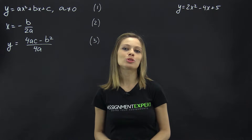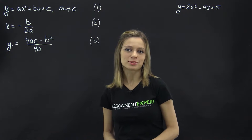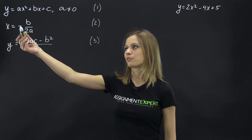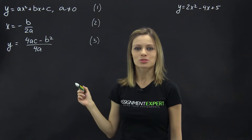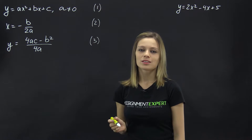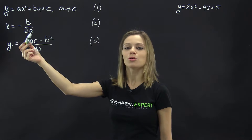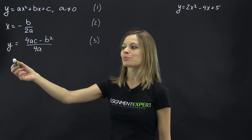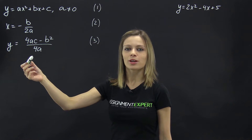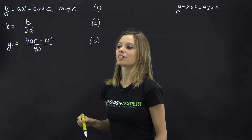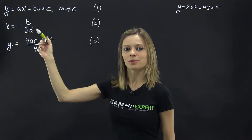A vertex formula is the formula used for calculating the coordinates of the vertex of the parabola y equals ax squared plus bx plus c, where a is not equal to zero. The coordinates of its vertex are: x equals negative b over 2a, and y equals 4ac minus b squared over 4a, or it can be calculated by substituting the x coordinate into the equation of the parabola.